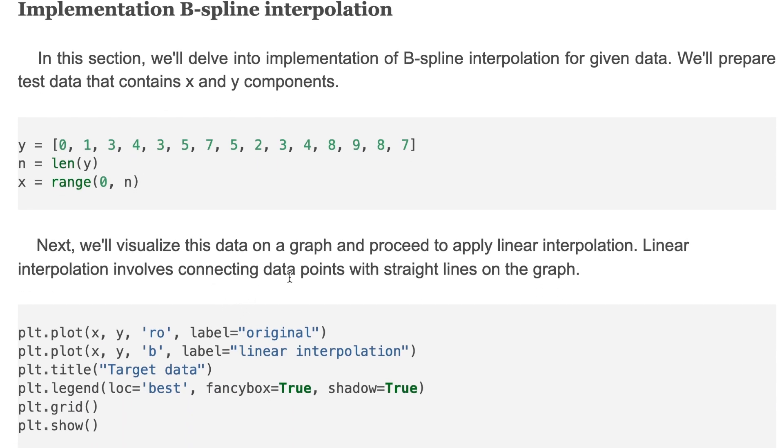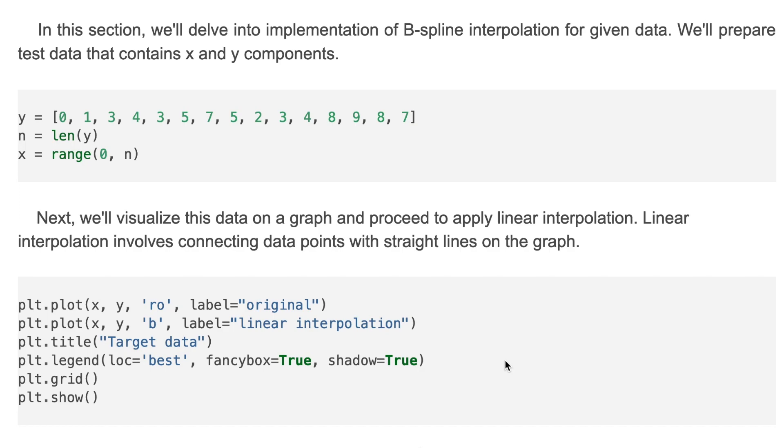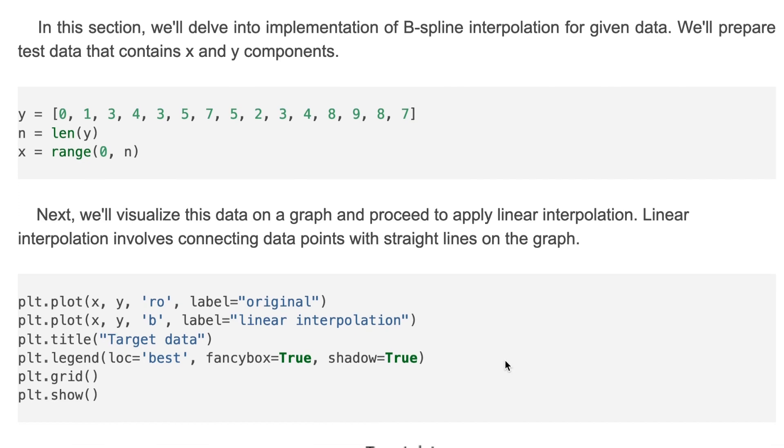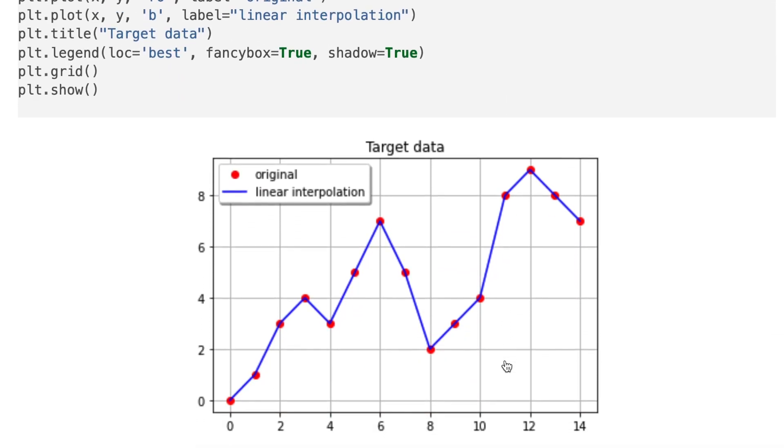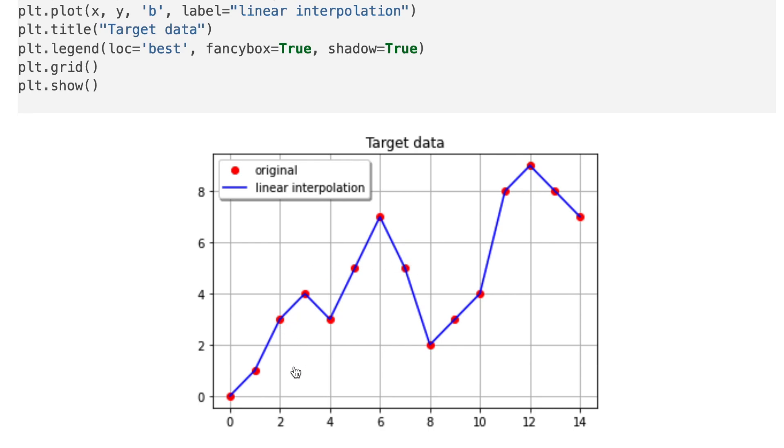Then we'll visualize this data on a graph and proceed to apply a linear interpolation. Linear interpolation involves connecting data points with straight lines on a graph. Here is the given original data points and we applied linear interpolation by just connecting the points with straight lines.